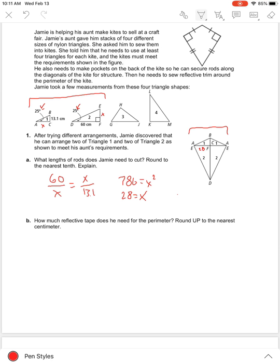So what lengths of rods does he need to cut? He has two 28s, so that would be a 56 cm rod. And then the vertical rod would be 60 plus 13.1, which is 73.1.